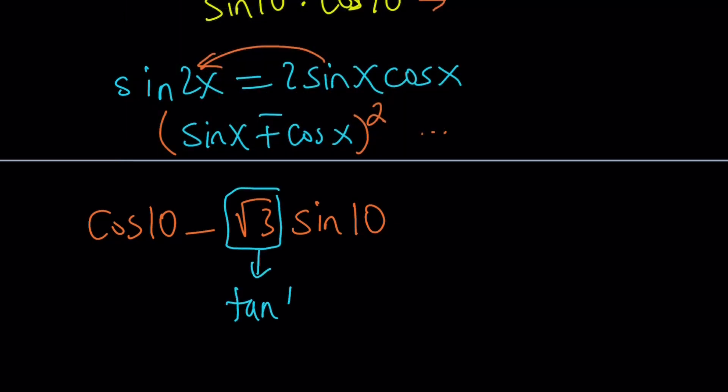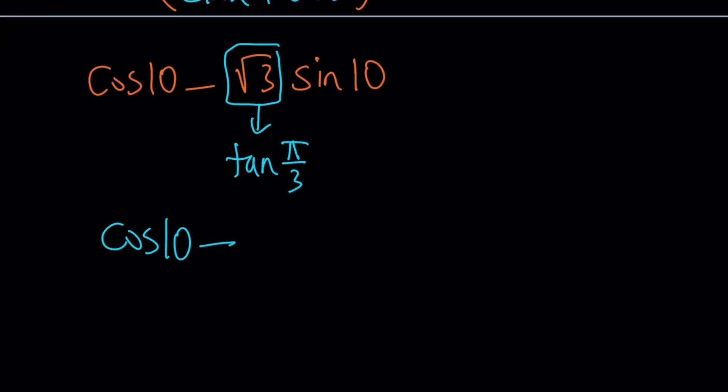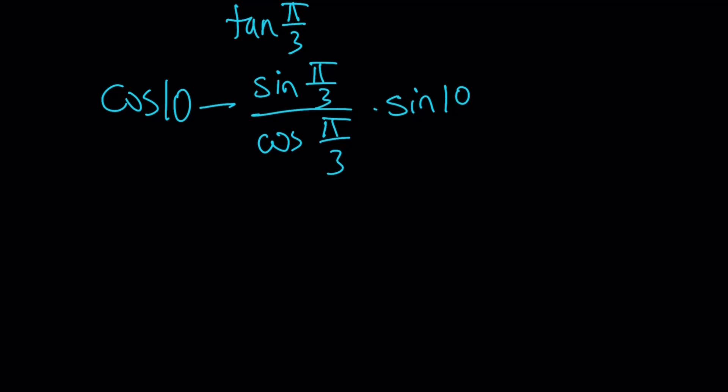And now I'm going to replace square root of 3 with tangent of 60 degrees, which is tangent pi over 3. Why am I doing that, right? Why would you replace a number by the tangent of something? Because I want to write the tangent as sine over cosine. There's an identity, right? And then turn this into a difference or sum, because that's what's going to happen.